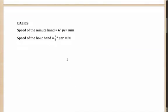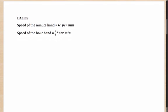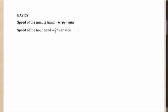To begin with, the most basic and important idea is that the speed of the minute hand is 6 degrees per minute, whereas the speed of the hour hand is half a degree per minute. The minute hand moves 360 degrees in one hour — so 360 degrees in 60 minutes, which is 6 degrees per minute. Similarly, the hour hand moves one full circle in 12 hours: 360 degrees in 720 minutes, or half a degree per minute.